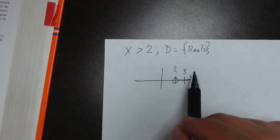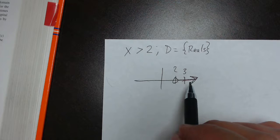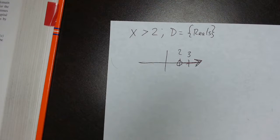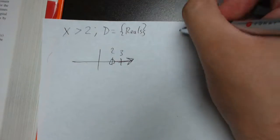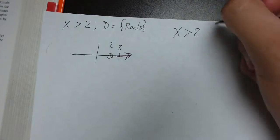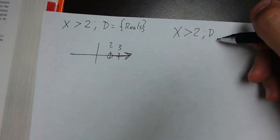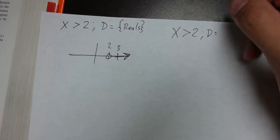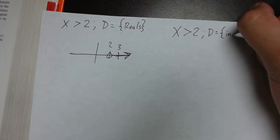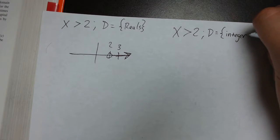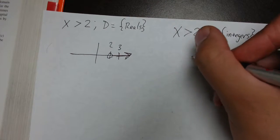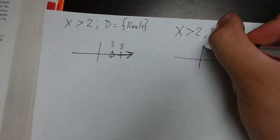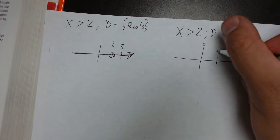Real numbers is a really easy domain because you get to draw straight lines like you have been doing. Now let's say we have to graph, we'll do the same one. Let's say if we did x is greater than 2, but our domain, which is represented by this D, is equal to the subset of integers. Now, if we remember integers, that's only positive and negative whole numbers. So I'll go ahead and I'll draw the number line. That's 0. I'm going to start at 2.